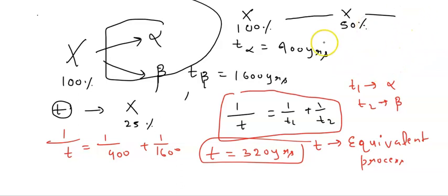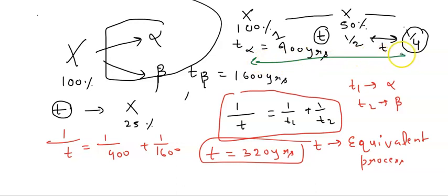Then half of this will also be half. So how much time will it take for 100 to become 50%? It takes t, which is 320 years. So overall, how much time will it take? 320 doubled, which is 640 years.